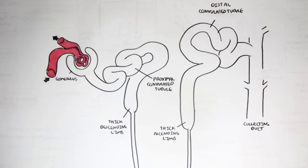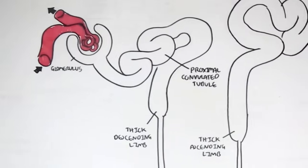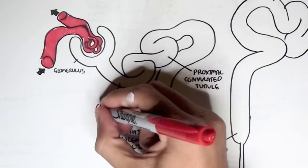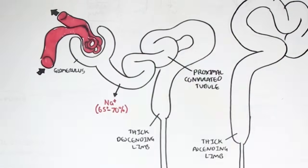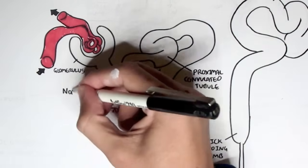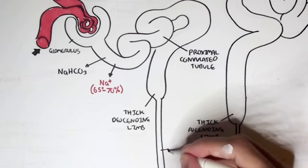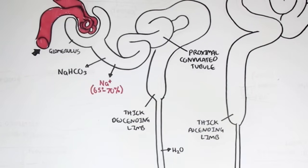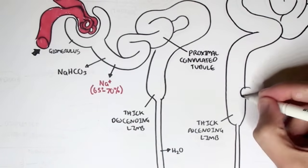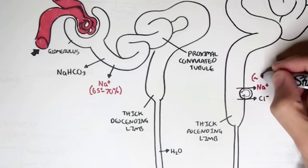Let's look at where along the tubule of the nephron sodium and other substances can be reabsorbed. The main site of sodium reabsorption is in the proximal convoluted tubules, where approximately 65–70% is absorbed. Sodium bicarbonate can also be absorbed there. Water is reabsorbed within the descending limb. In the thick ascending limb, there is a cotransporter which reabsorbs sodium, potassium, and chloride — about 25% of sodium is reabsorbed here.